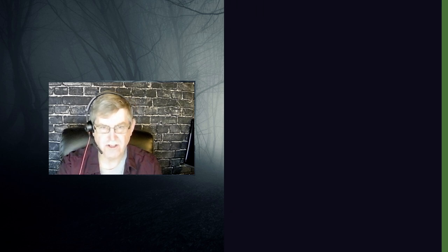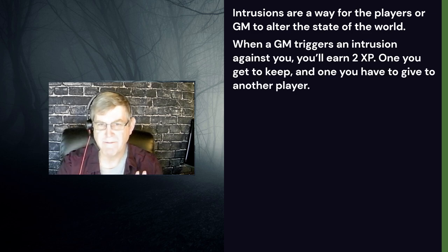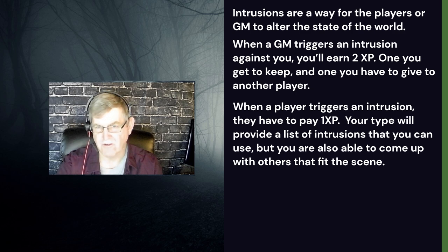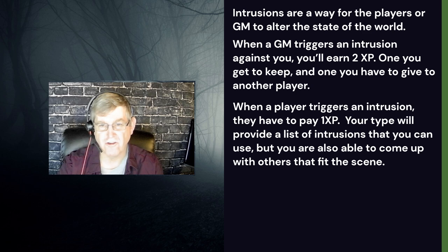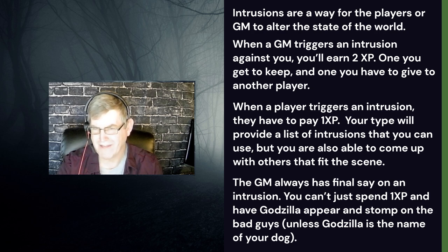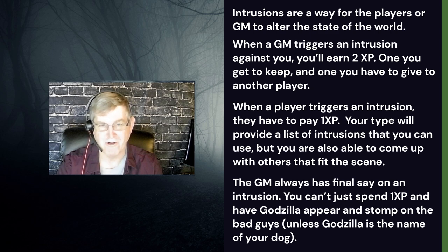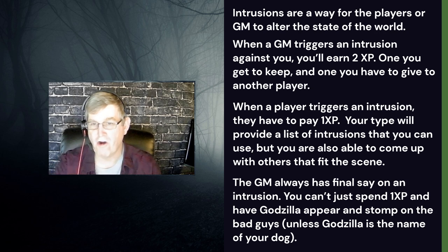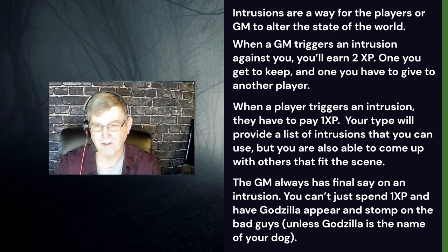Intrusions are a way for players or the GM to alter the state of the world. When a GM triggers an intrusion, you earn two experience points — one to keep and one to give another player. When a player triggers an intrusion, they pay one experience point to change the state of the world. Your type provides a list of intrusions you can use, but you can come up with others. The GM always has final say. For example, you can't just spend one XP to have Godzilla stomp the bad guys — unless Godzilla is your guard dog and you whistle him out of the car to chase off the enemies. That's a perfectly good player intrusion.